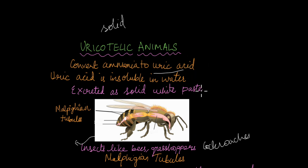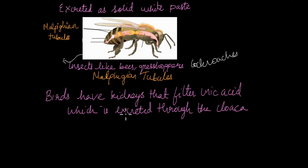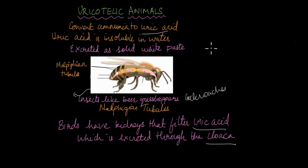Birds, on the other hand, have kidneys like we do. The kidneys filter out uric acid from the blood, and it is excreted through an opening in their body known as the cloaca.